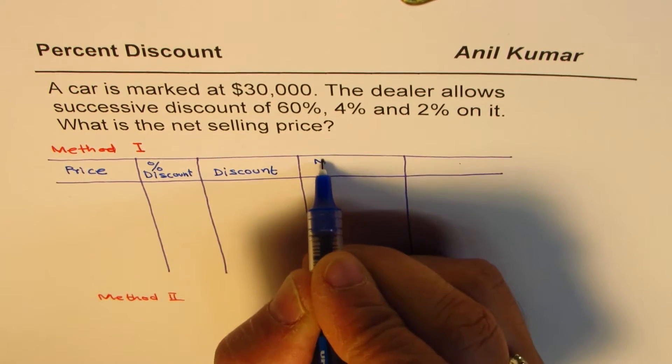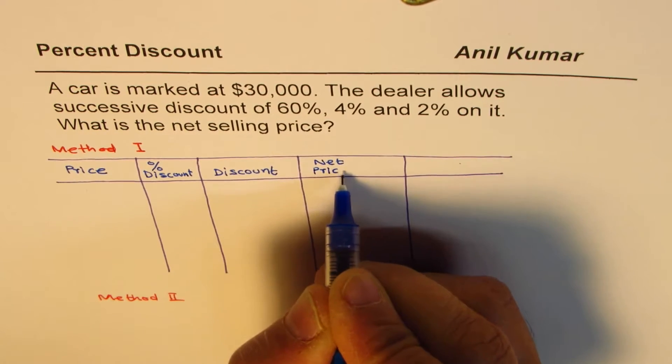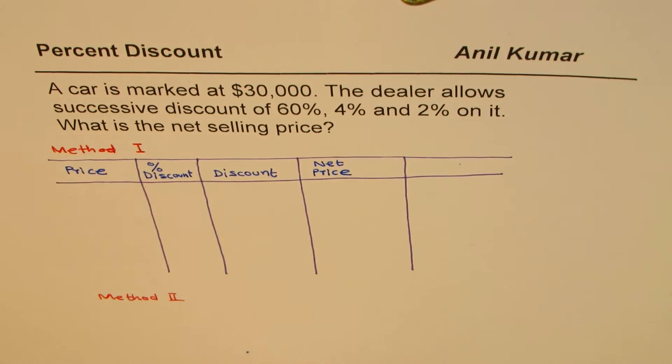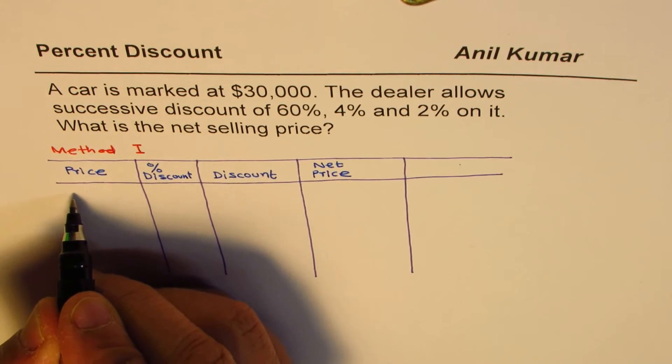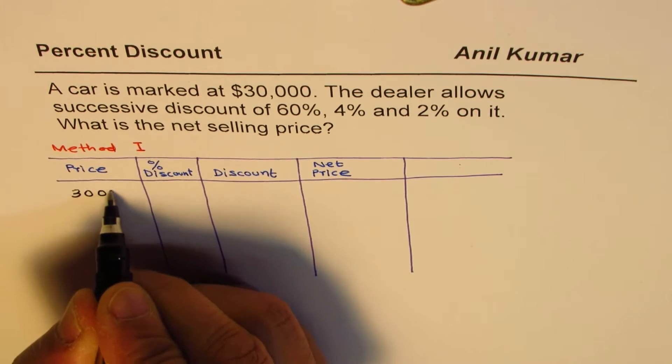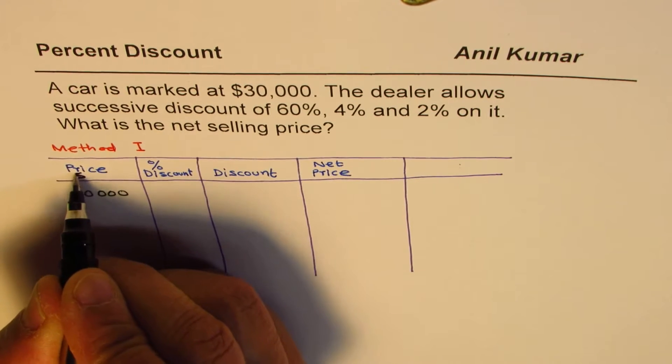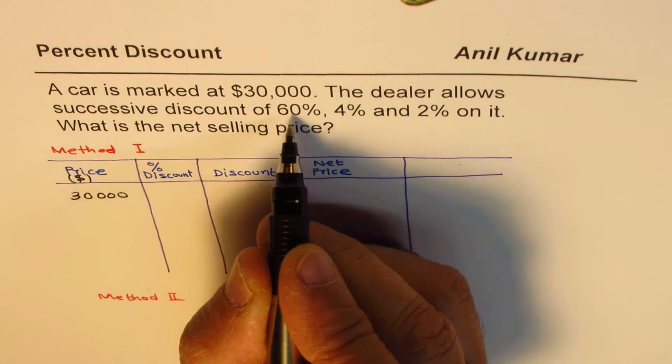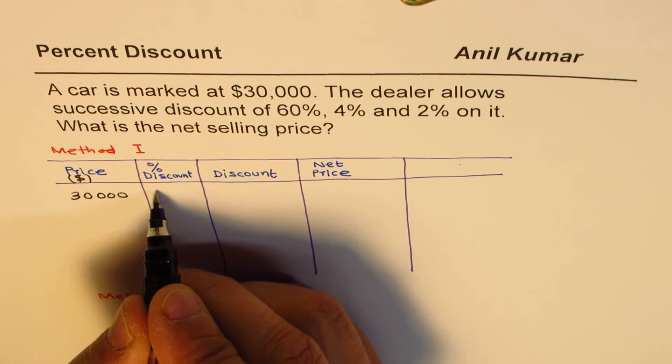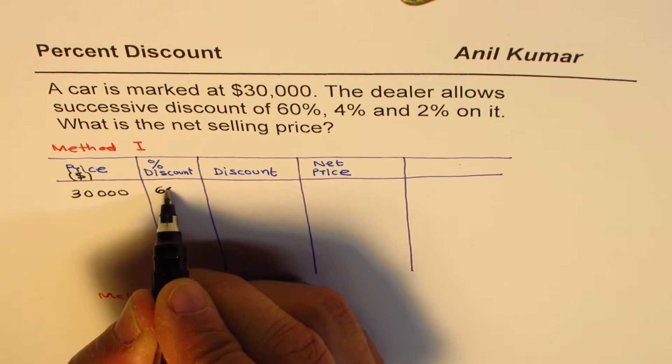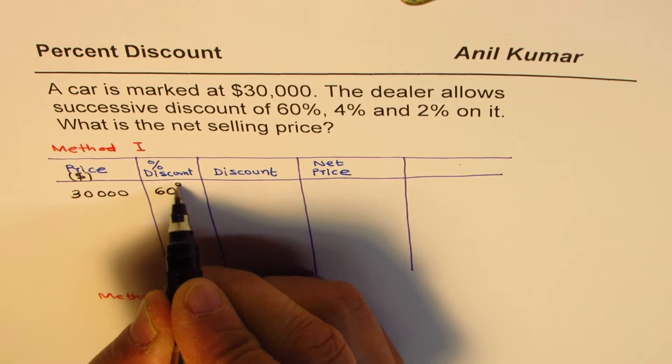Then we say net price. In this particular question, I've changed the price which was given by my subscriber to $30,000. So the price is $30,000. Percentage discount: first we'll apply 60%. Successive means one after the other, 60%. So 60% in decimals is 0.6.